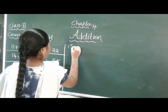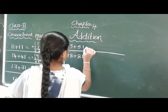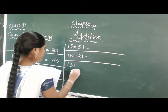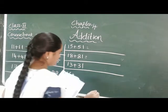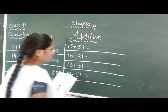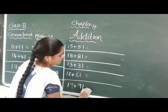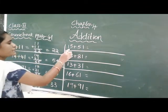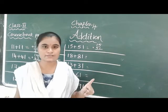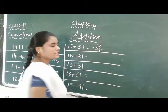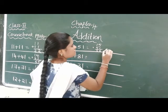15 plus 51: 5 in the mind, take 1 finger, 5 after 6. Then 1 in the mind, take 5 fingers, 1 after 2, 3, 4, 5, 6. Answer is 66.